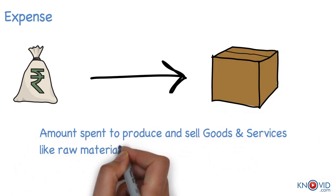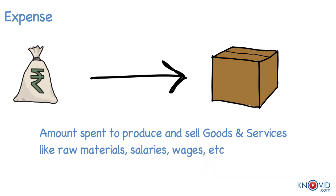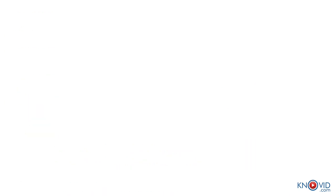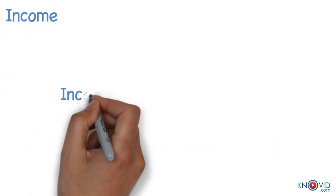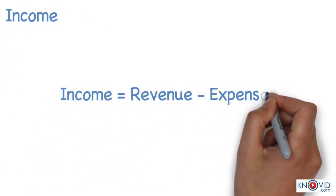Expense is the amount spent in order to produce and sell the goods and services. For example, purchase of raw materials, payment of salaries, wages, etc. are expenses. Income is the difference between revenue and expense.